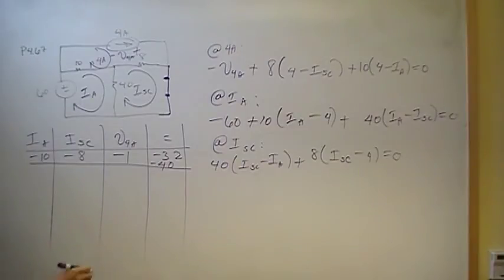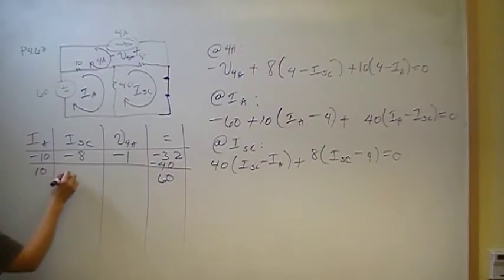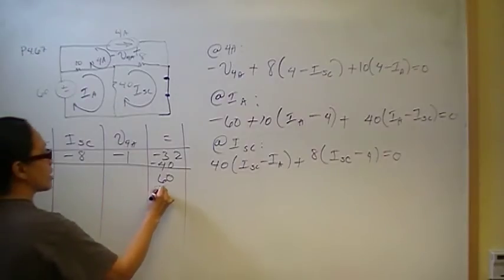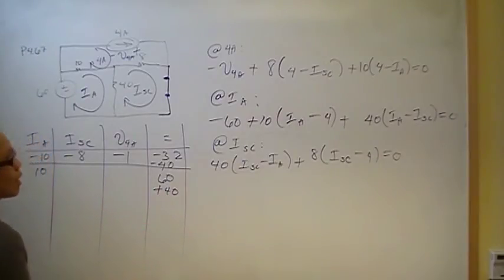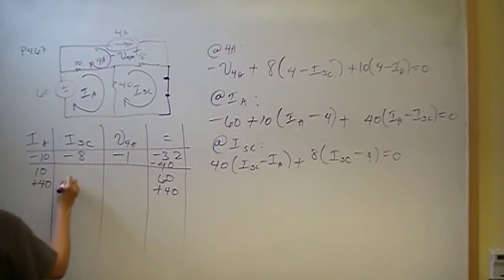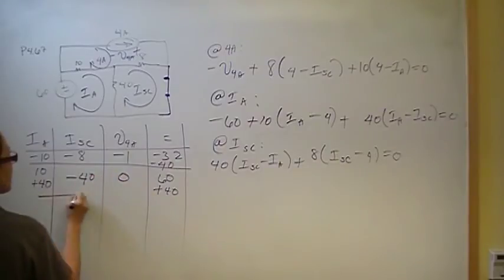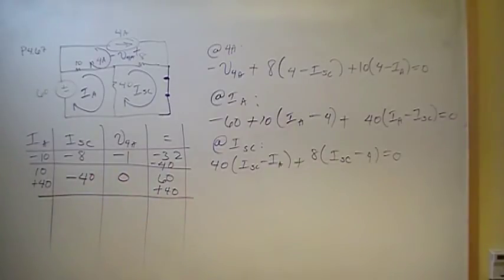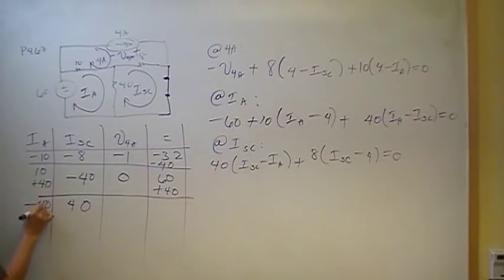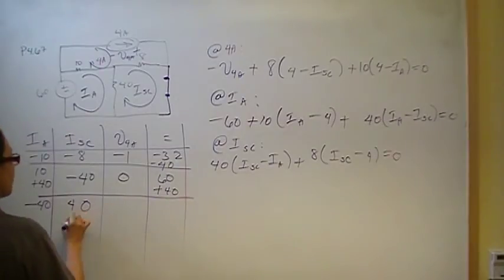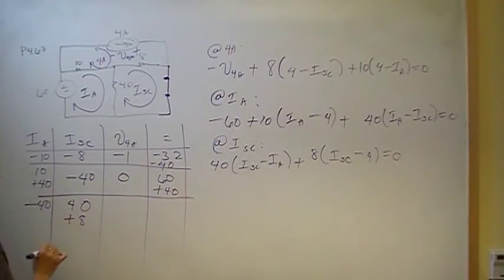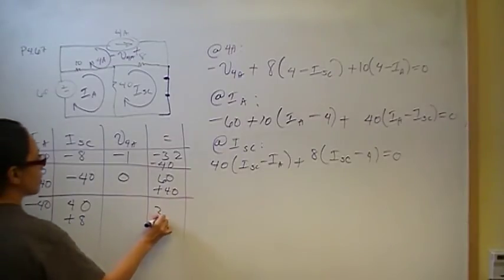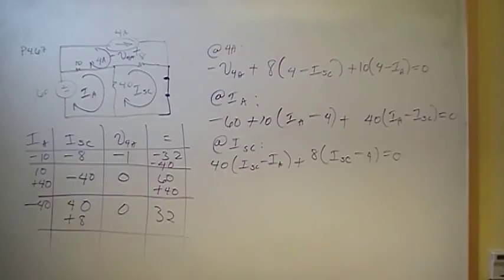The second equation: negative 60 moves to the right-hand side as positive 60. We have 10 Ia, with negative 40 moving to the right as positive 40, plus 40 Ia, giving coefficient 50 for Ia; negative 40 for I short circuit; and zero for V_4amp. The third equation gives: negative 40 Ia, 40 plus 8 equals 48 for I short circuit, zero for V_4amp, and negative 32 moves to the right as positive 32.